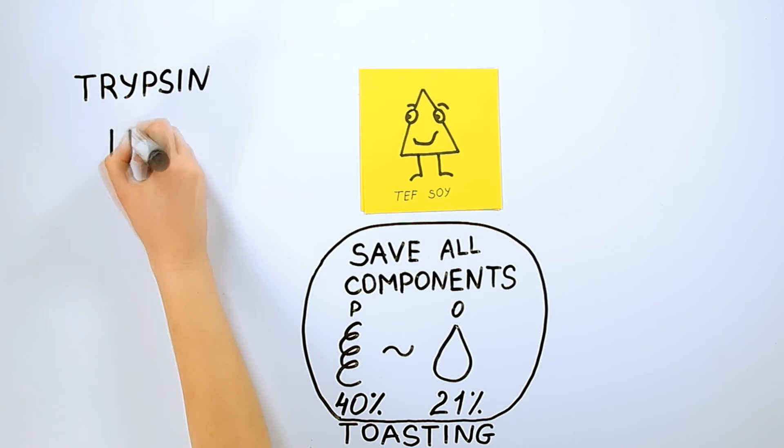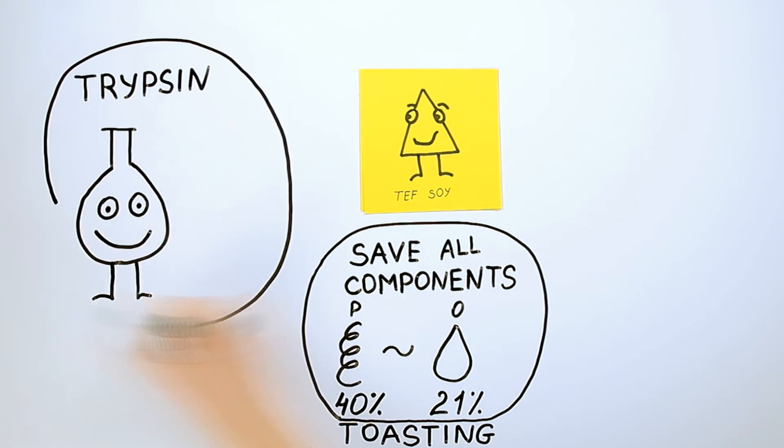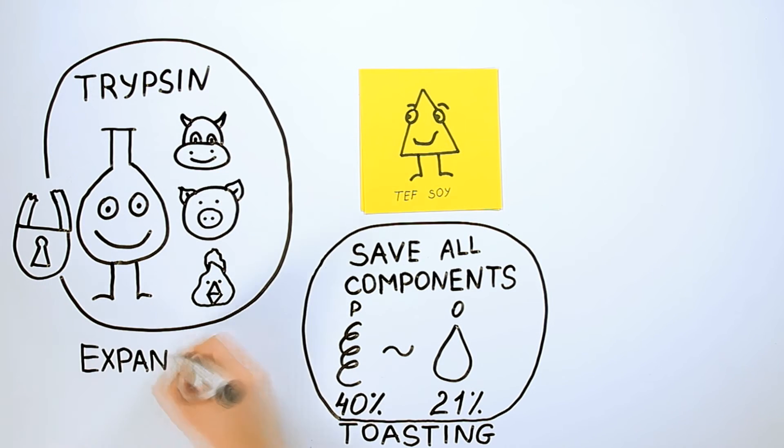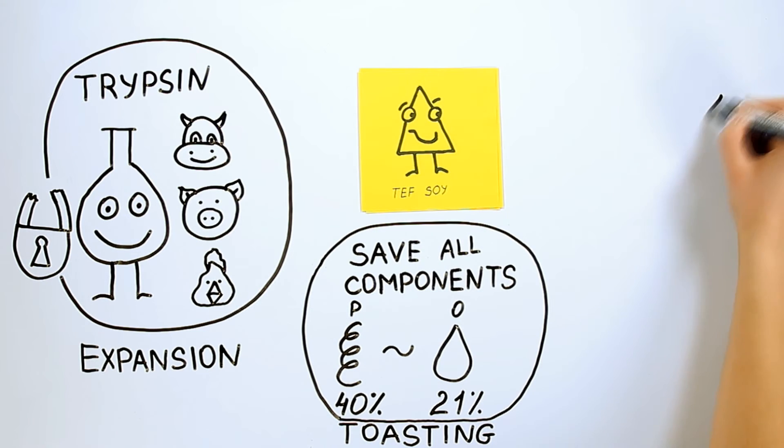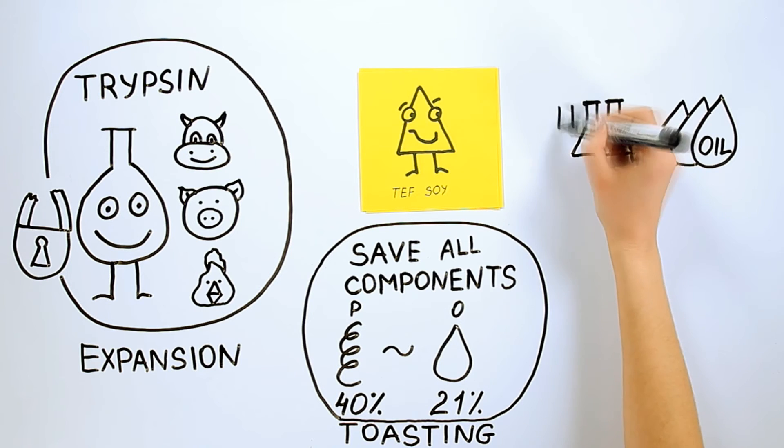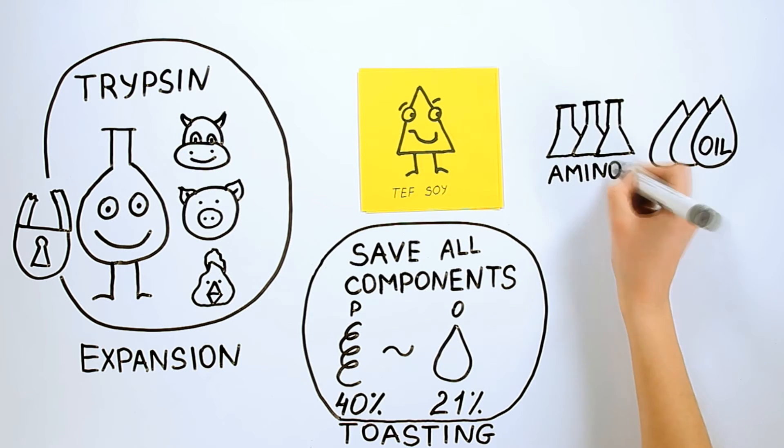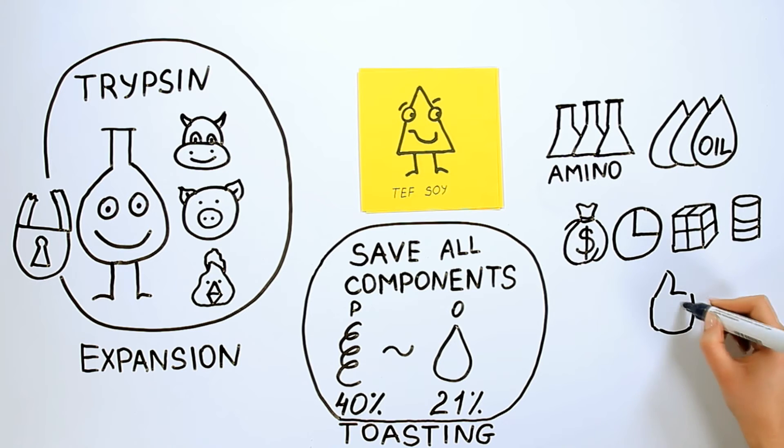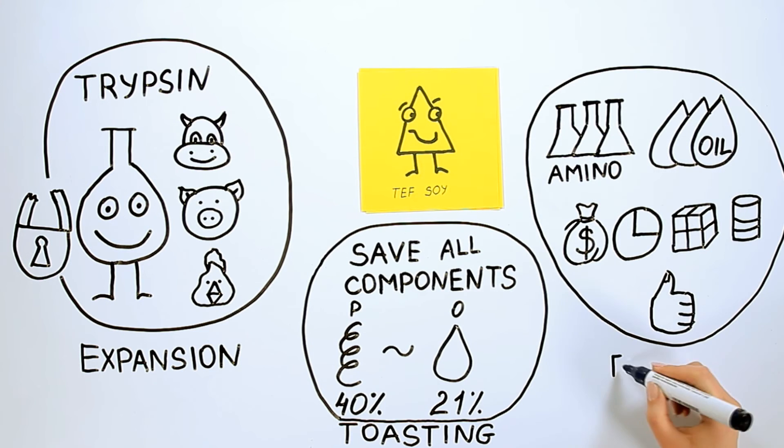Expanded: The process of expanding guarantees complete destruction of trypsin inhibitor and other anti-nutritional substances which interfere with the animal's digestive tract. Full Fat: There is no need to use additional oil when entering the TEF soy into the animal feed. This eliminates spending financial resources, time and material resources for transportation, construction and maintenance of storage tanks for oil and mixing it with the dry feed.